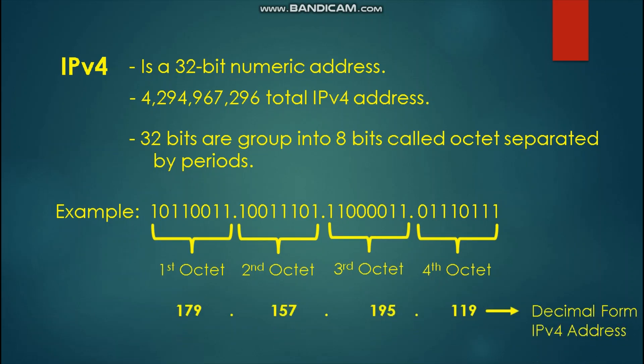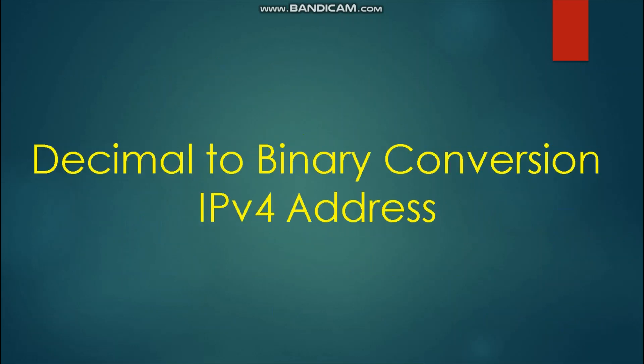This is the decimal form of IPv4, which humans can read and understand, while this is the binary form that the machine can understand. Let us proceed with the decimal to binary conversion of IPv4 address, for us to know and understand the machine language.